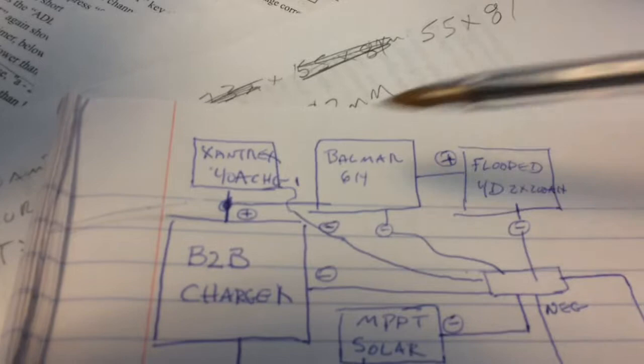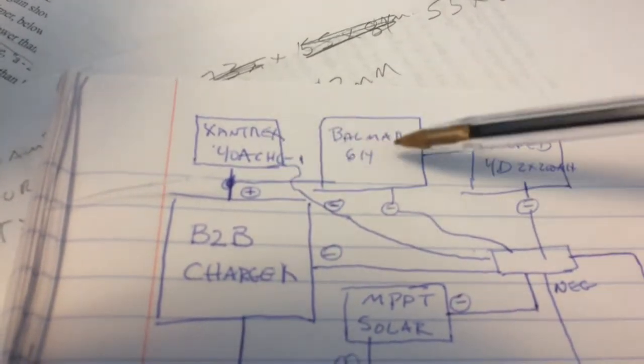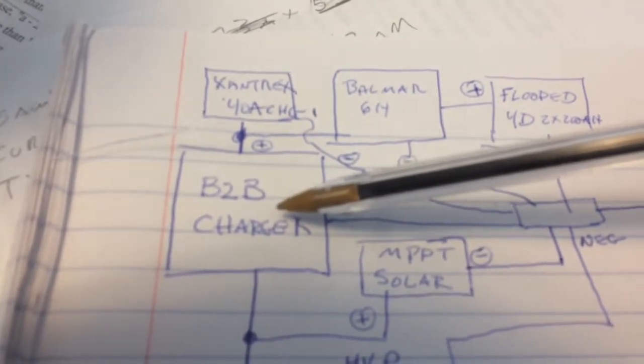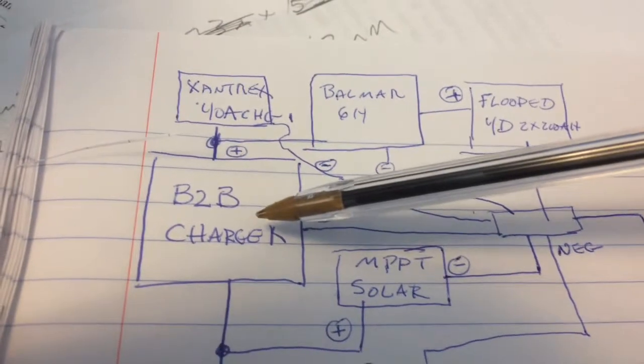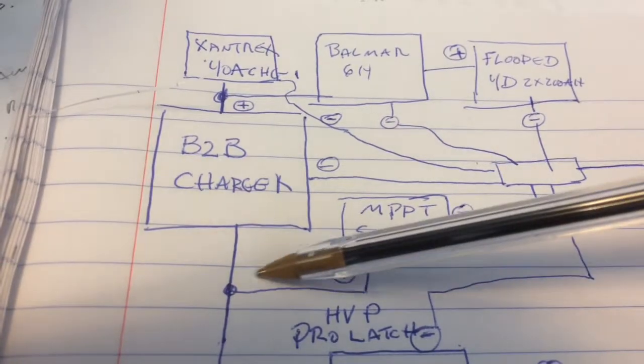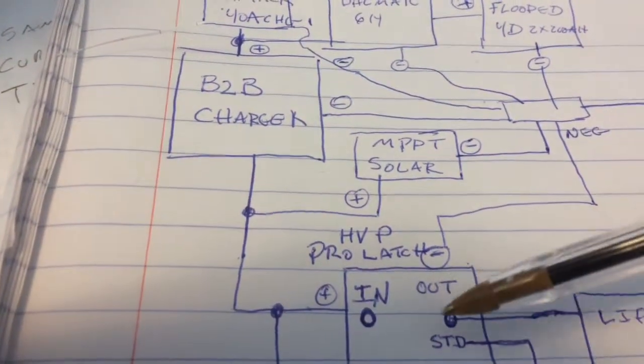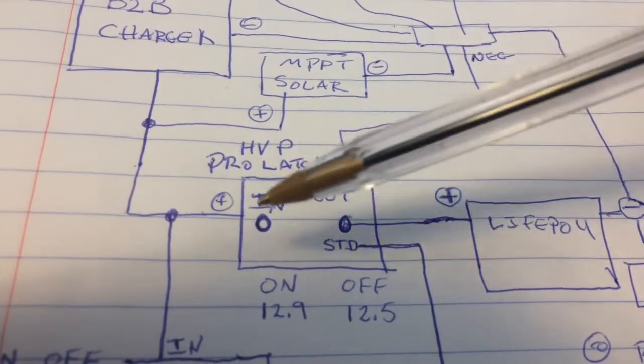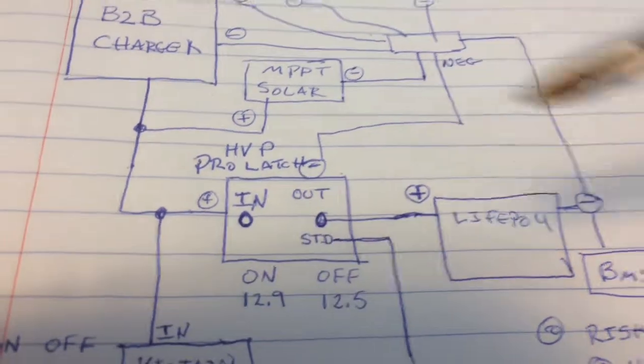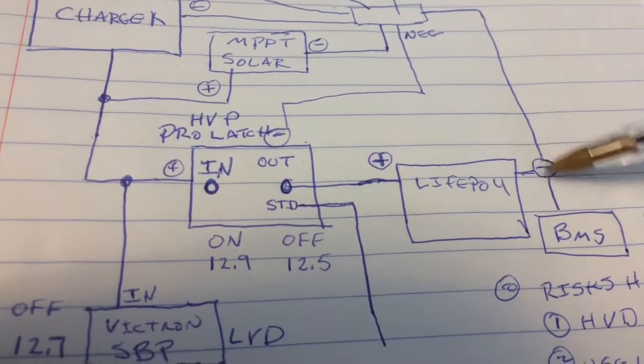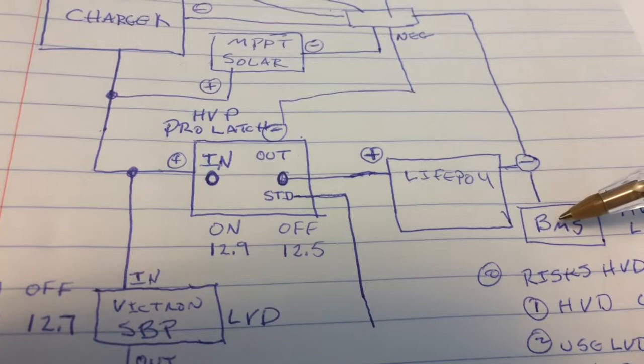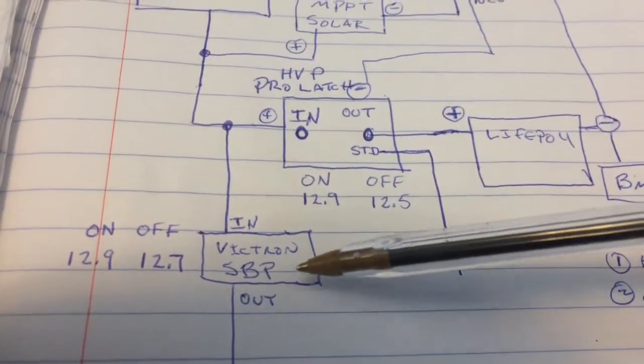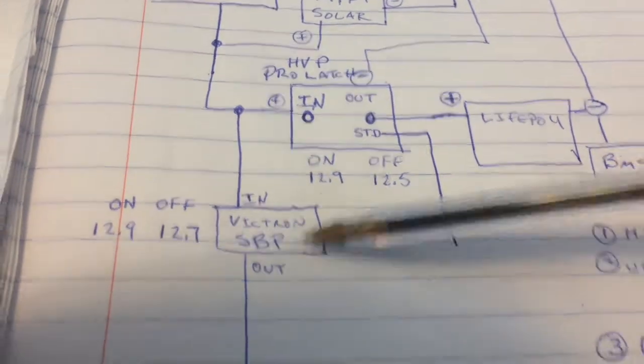So here's a brief schematic of what I'm looking at. I've got my regular shore charger and my Balmart 614 and that's going to charge my battery to battery charger. I've got a Sterling battery to battery charger. And then I've got solar panels that are going to charge, that are going to bypass the B2B charger and go right to my lithium battery. So I've got a high voltage disconnect here that I'm considering putting in.